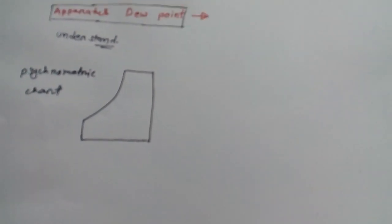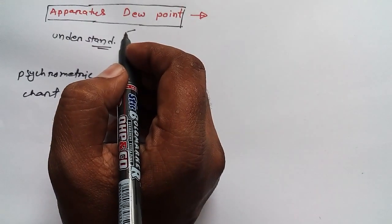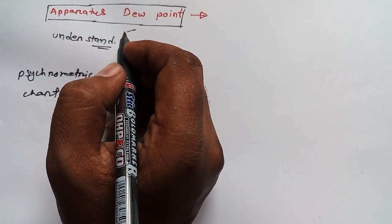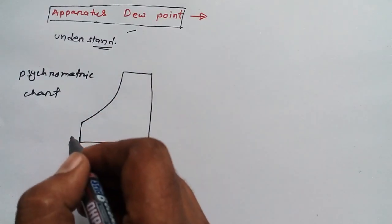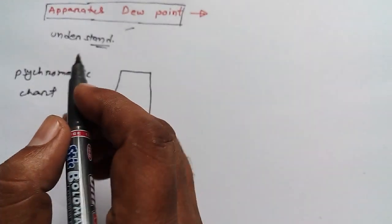Alright my dear, so today we are going to discuss apparatus dew point. As you know, this is one of the most important topics. What we have to do is draw a psychometric chart. This is the basic format for drawing a psychometric chart to show you how to understand the basic concept of apparatus dew point.